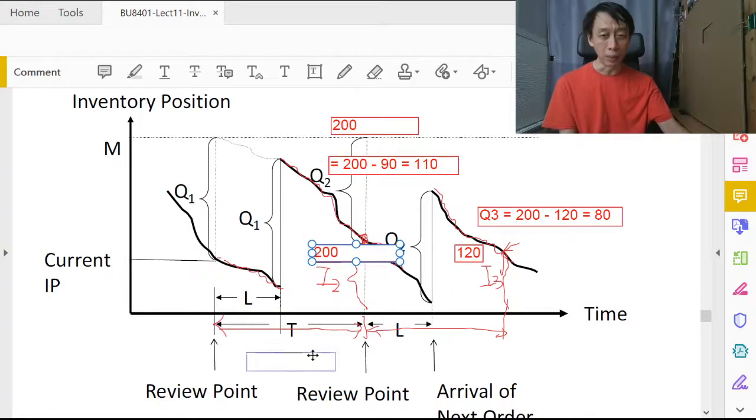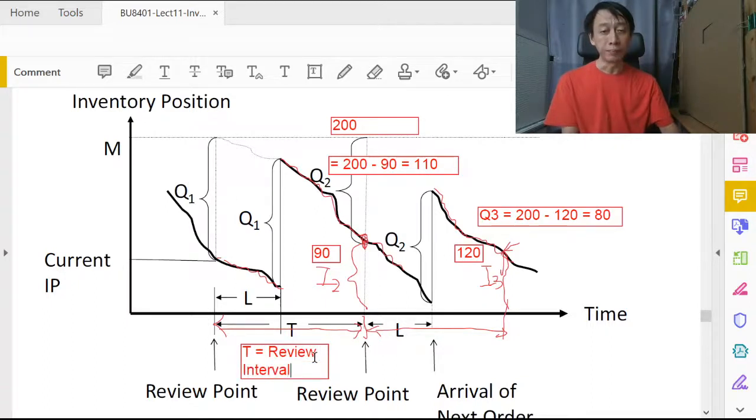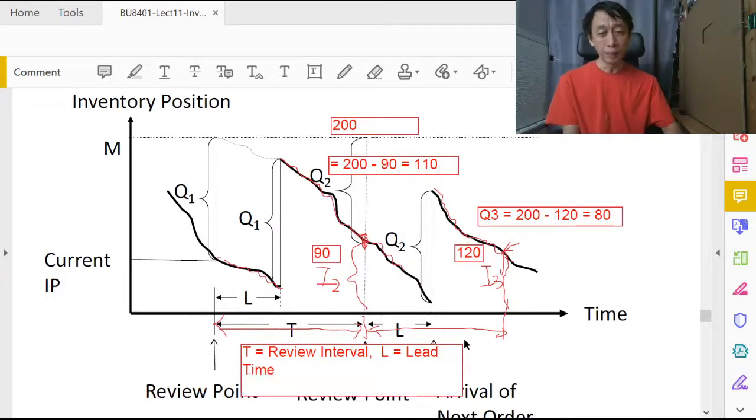T is the review interval in days, weeks, or sometimes months. L is the lead time, which is also a constant. Because L and T are so important, we call L plus T, or T plus L, the protection interval.